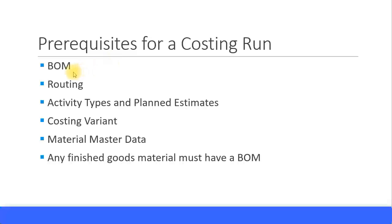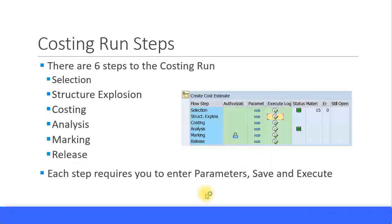The prerequisites for the costing run are the same as for the material cost estimate with quantity structure: you need bills of materials, routing, activity types with their plan estimates, the costing variant configured, and material master data. Any finished goods included in the costing run must have a bill of materials. You can run the costing run for one plant or a range of plants within your company code, but if a finished good does not have a bill of materials it will throw an error.